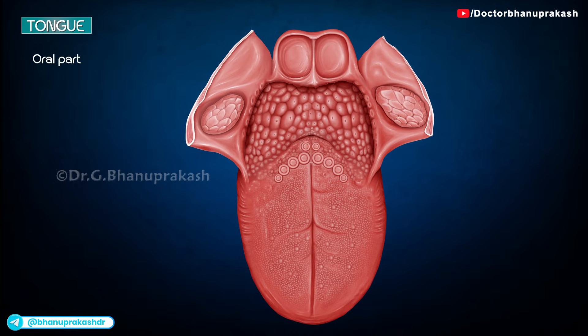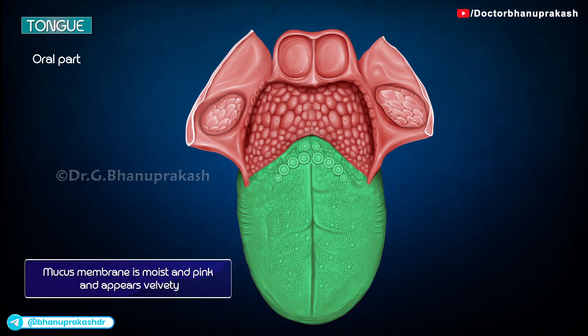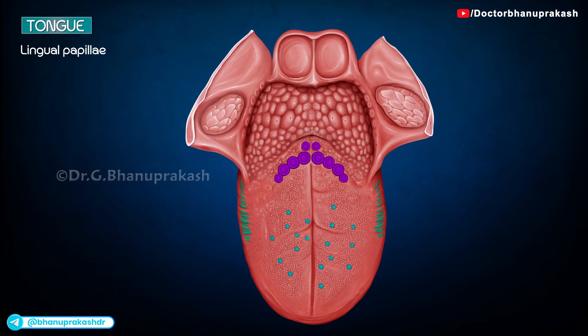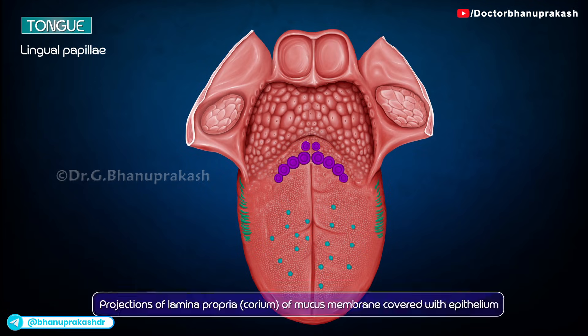The dorsum of the oral part presents a shallow median groove. The mucous membrane is moist and pink, and appears velvety due to the presence of numerous papillae. Lingual papillae are projections of the lamina propria of the mucous membrane, covered by epithelium. There are mainly four types of papillae.